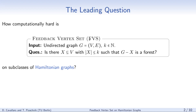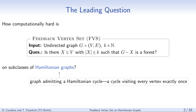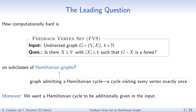The feedback vertex set problem asks: given an undirected graph G and an integer k, whether we can remove at most k vertices to obtain a forest. In this paper, a Hamiltonian graph is a graph that admits a Hamiltonian cycle, which is a cycle that visits every vertex exactly once. Moreover, we want a Hamiltonian cycle to be additionally given in the input.